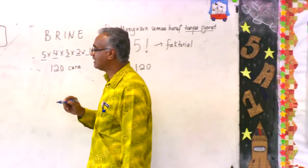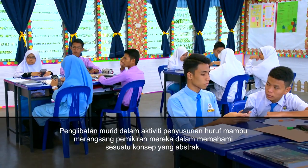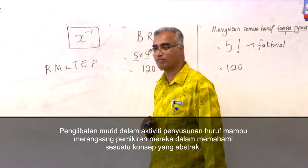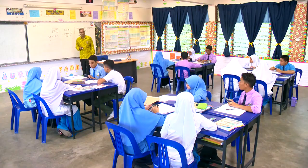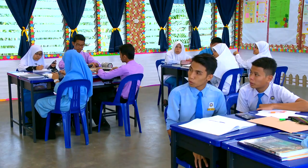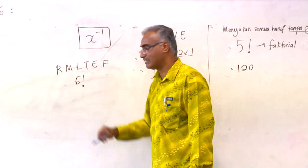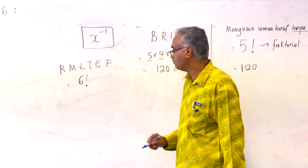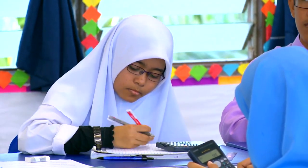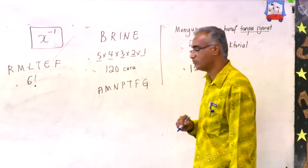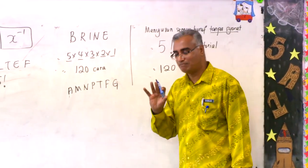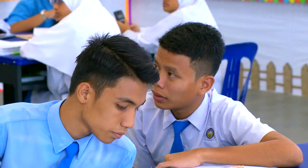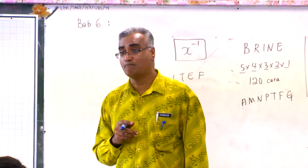Kalau saya beri 6 huruf berbeza: P, R, M, L, T, E, F — 6 huruf. Berapa cara? 720, iaitu 6 faktorial = 720. Kalau 7 huruf: A, M, N, P, T, F, G — 7 huruf. Berapakah bilangan cara menyusun 7 huruf itu? 7 faktorial. 7 faktorial berapa? 5,040 cara.